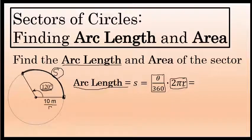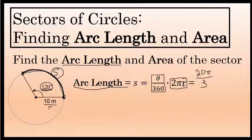You can use a calculator to help find this value. 120 over 360 times 2 times pi times r, which in this case is 10, is equal to exactly — in terms of pi — 20 pi over 3. That is an exact representation of the curved distance S, the arc length of this sector. We could approximate that as 20.9. The units here are meters, so that curved distance is approximately 20.9 meters. It is irrational because it will always be in terms of pi.